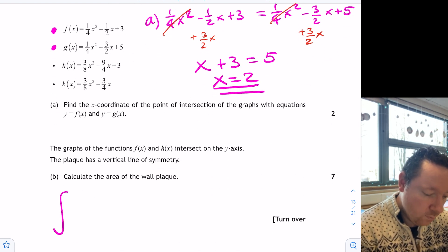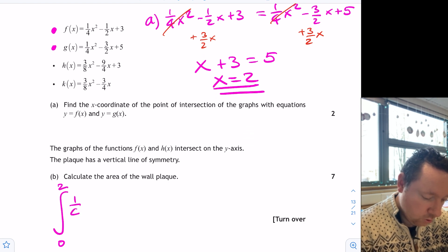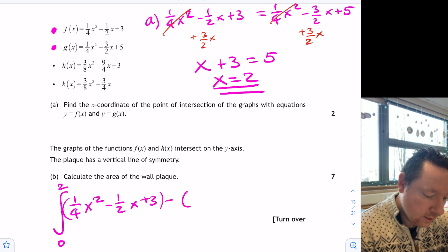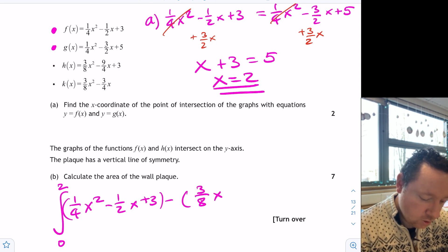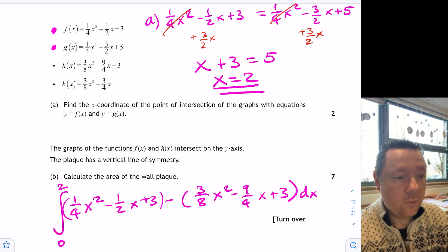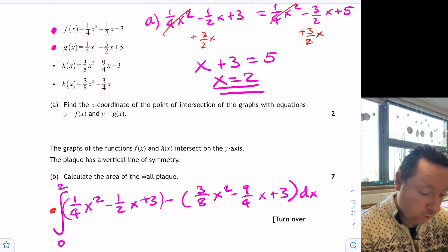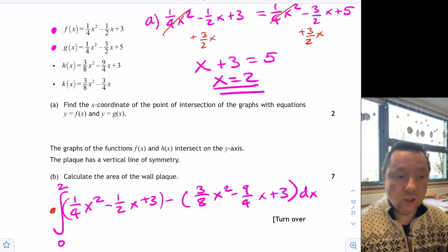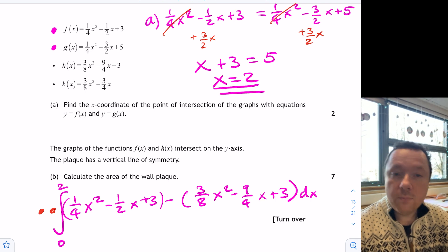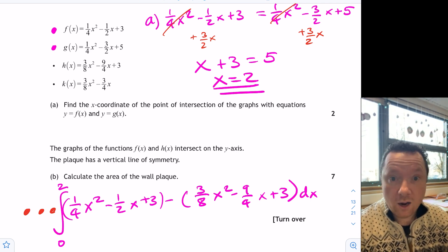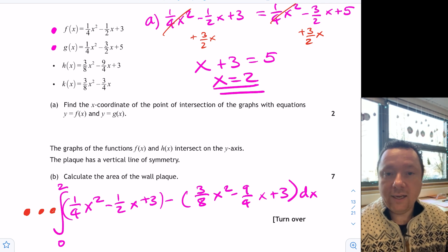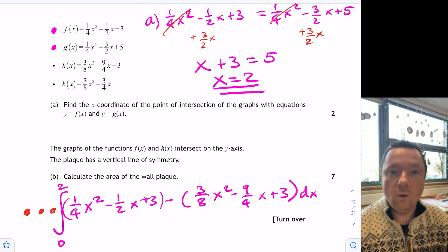So making sure you copy it down properly. It's the integral between zero and two of f(x) which is a quarter x squared minus a half x plus three, put that in brackets, take away h(x) which is this one, three eighths of x squared minus nine quarters of x plus three dx. So at that point you may be wondering, well how many marks do I get? Well at that point you get a mark for knowing to integrate, so using the integration sign. Another mark for putting in the limits zero to two, and then another mark for writing down the two curves taken away from each other. So three marks for literally doing no work. It's not bad that.